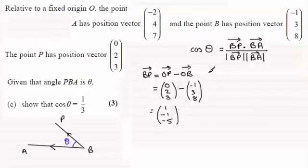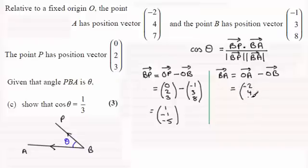We also need to get B to A. So let's just work that one out. B to A will be O to A minus O to B. O to A is (-2, 4, 7). And then we subtract O to B which is (-1, 3, 8).